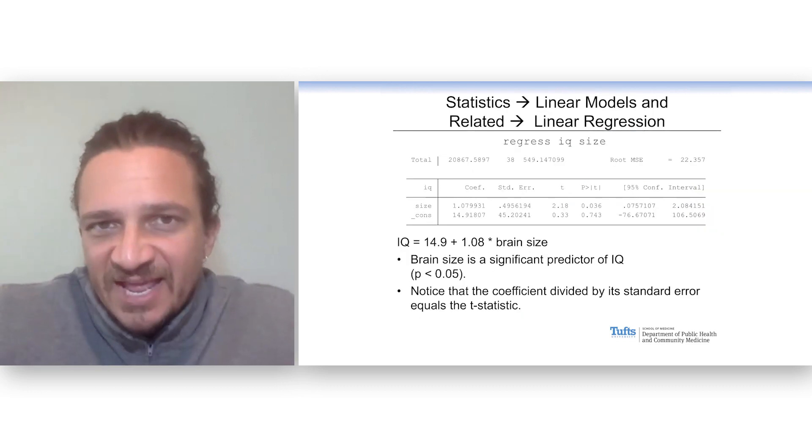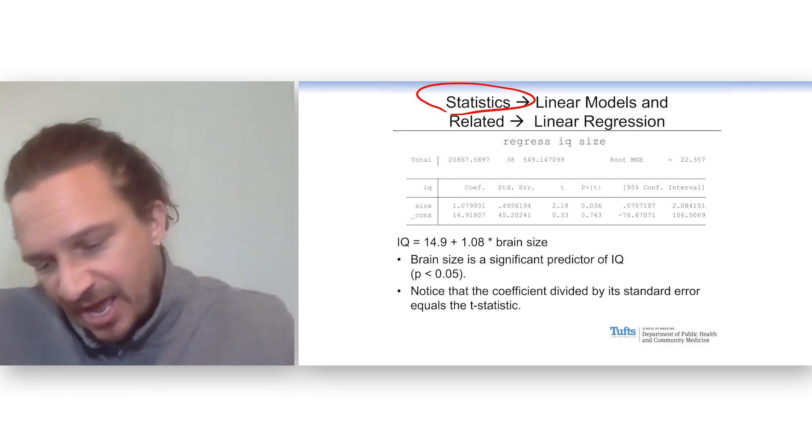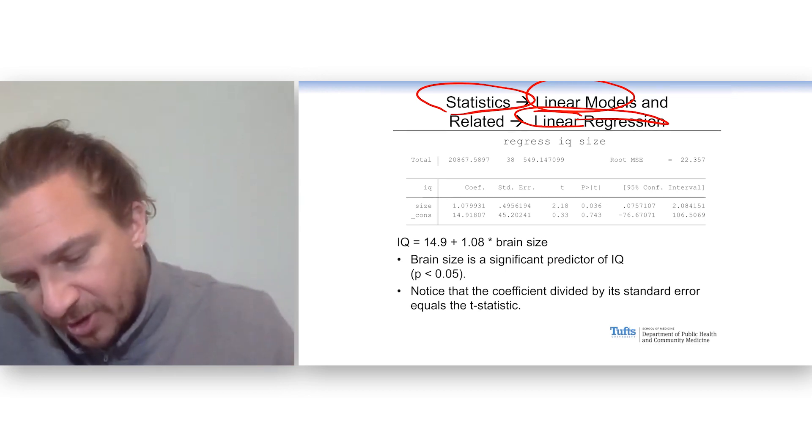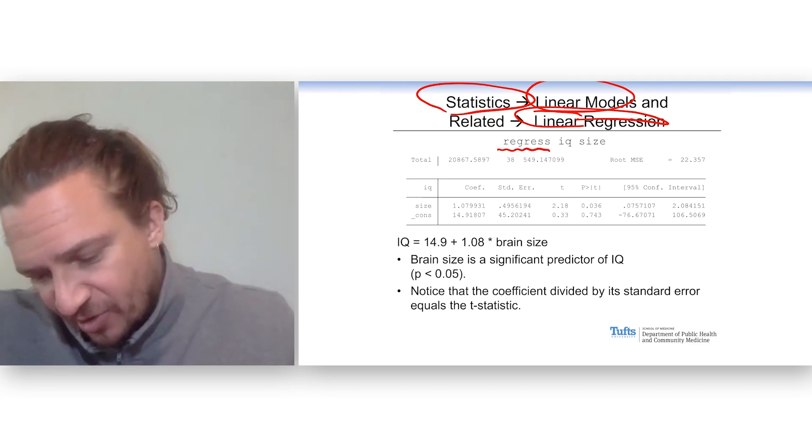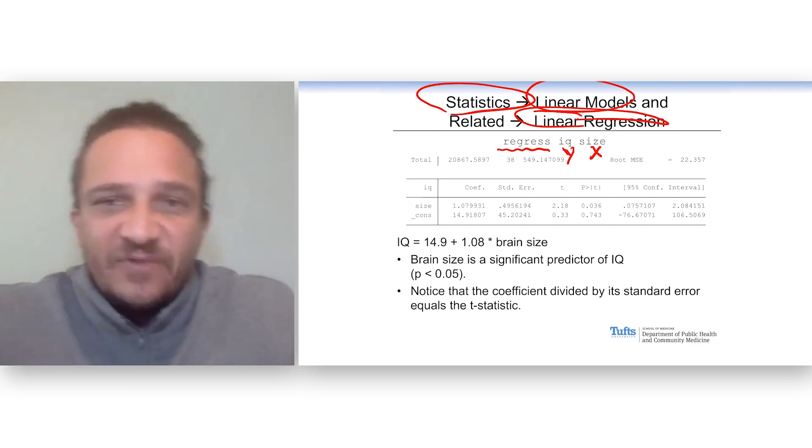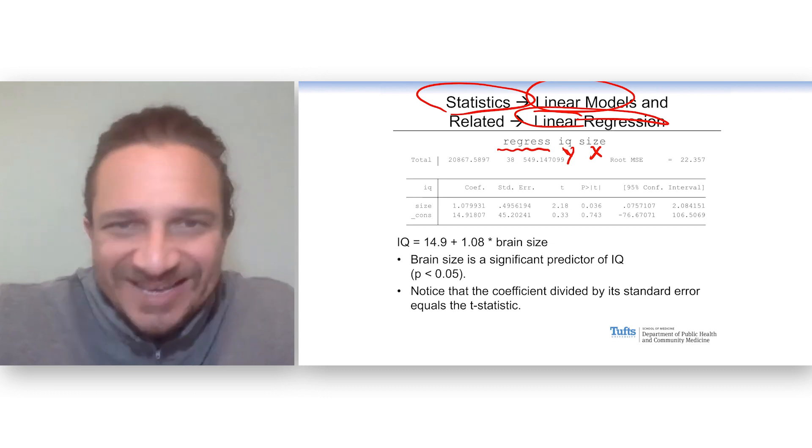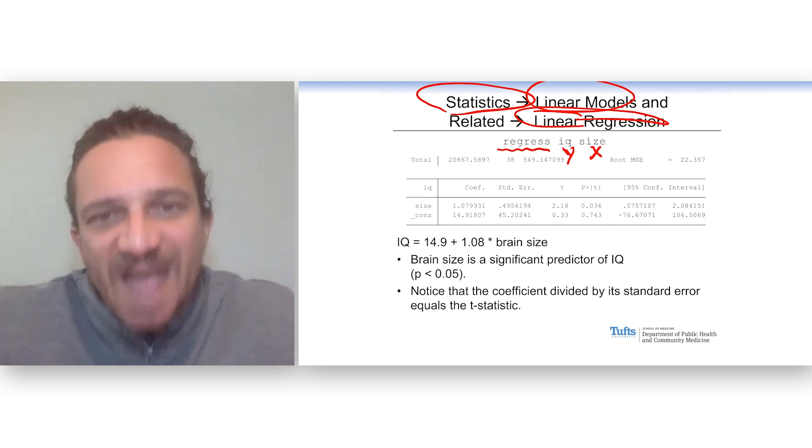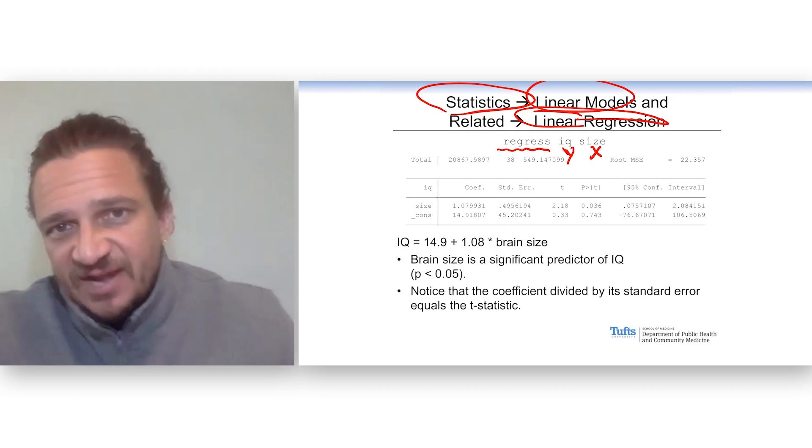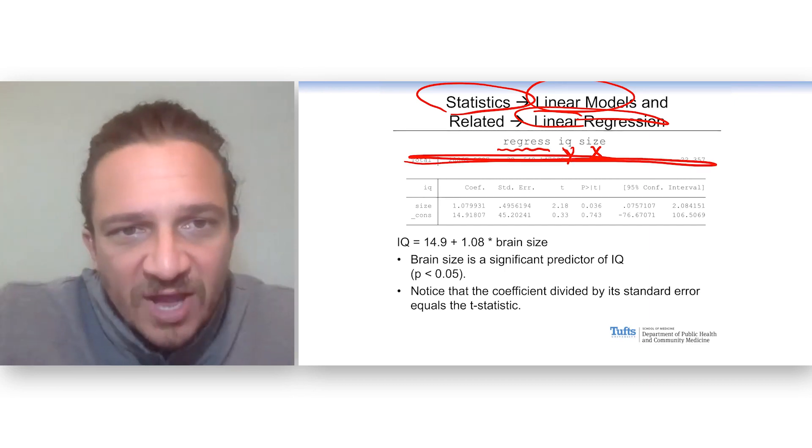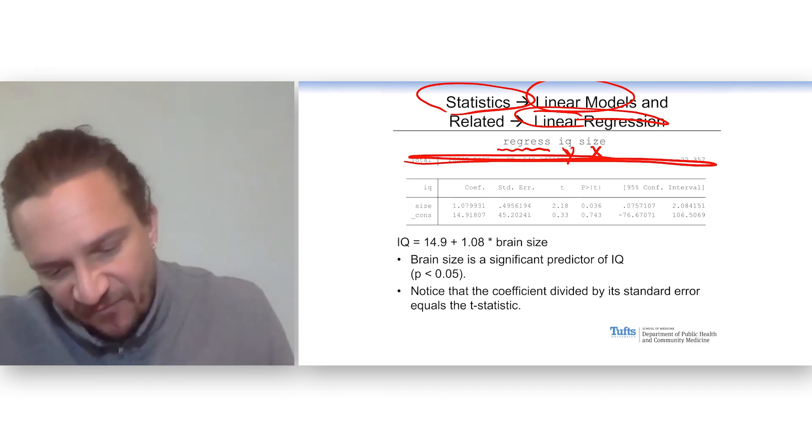And to run this in Stata, you go to the menu Statistics and then Linear Models and Related. And then you pick Linear Regression. This is a very powerful tool. It's actually pretty cool that you can run this with just one word, regress. And you type regress and then you put your Y variable or your dependent variable and then your X variable or your independent variable. It's called the dependent variable because your IQ depends on your brain size. So, here's the output that Stata is going to give us. And let's take a second here and read this.